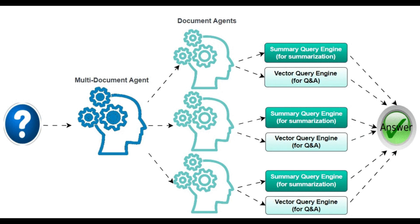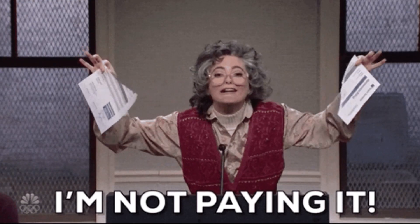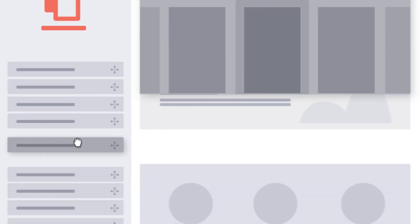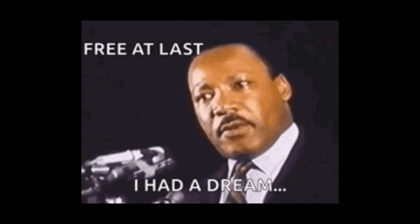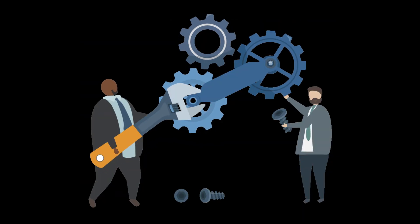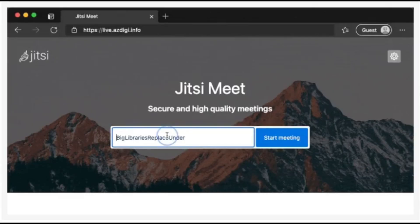Draw.io is perfect for creating flowcharts and diagrams with an easy-to-use interface — no subscriptions or paywalls. Try it at app.diagrams.net. Ease of use: drag-and-drop functionality makes it very user-friendly. Benefits: completely free with no feature restrictions and integrates well with other tools. The link is in the description below.